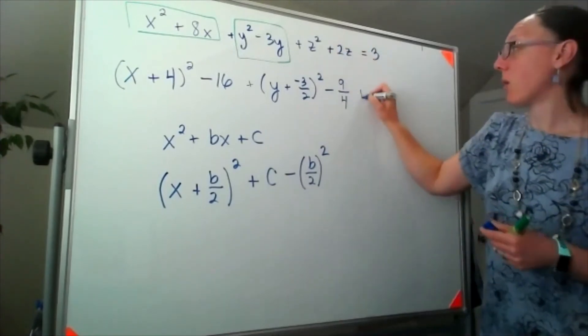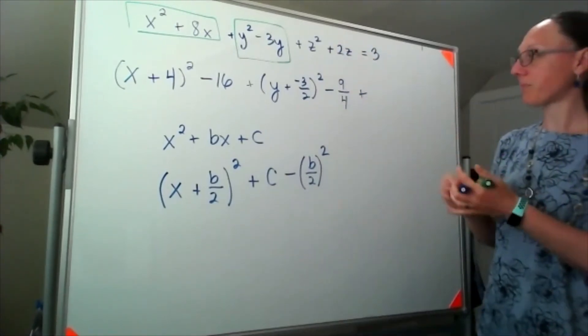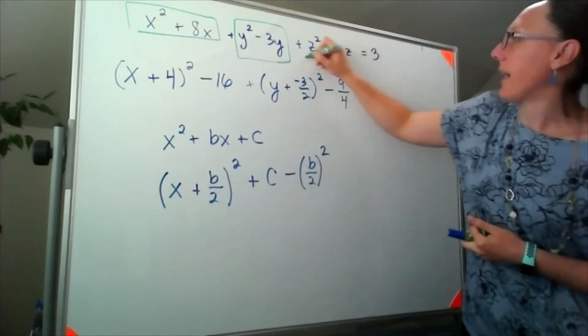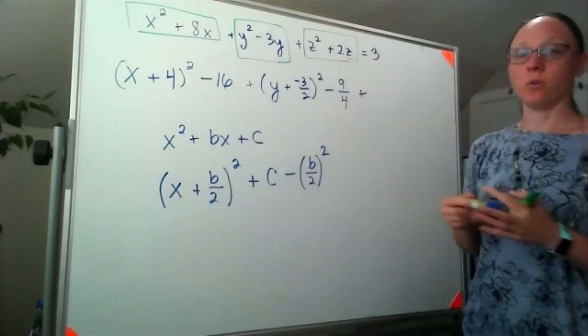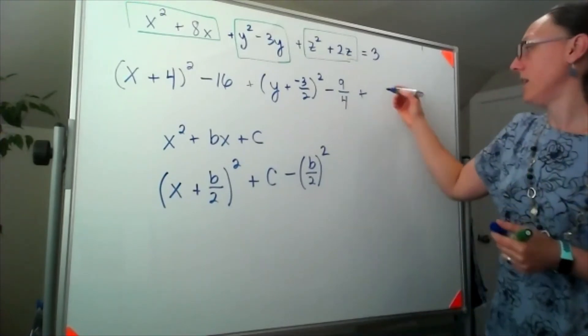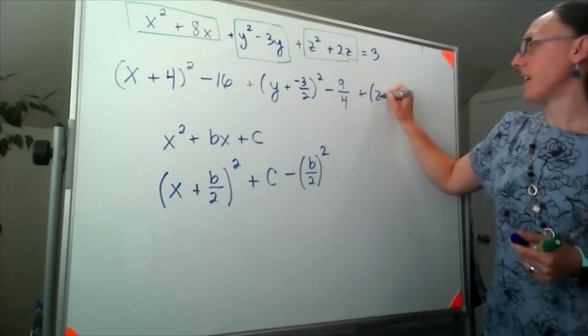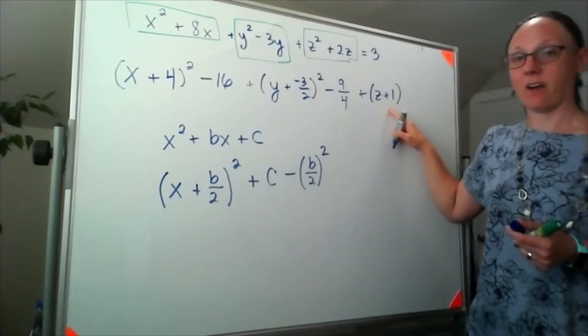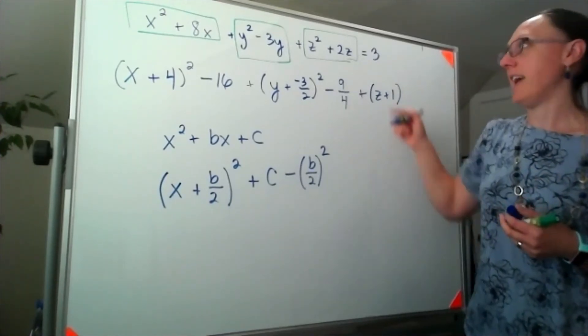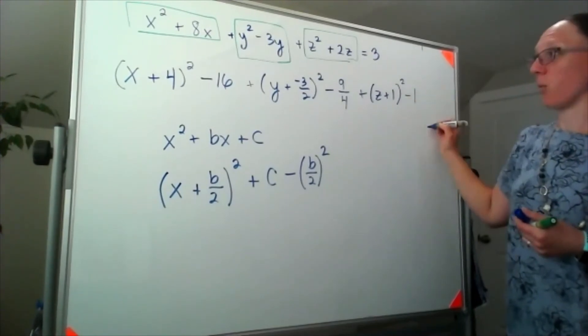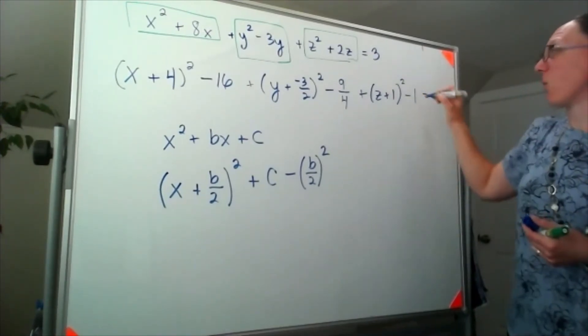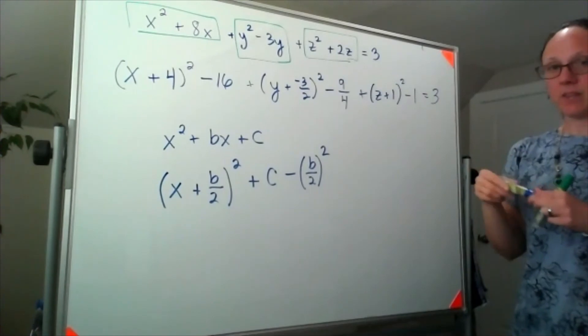Doing the same thing with my z components here. I'm looking at half of 2. It's going to give me a positive 1. So I've got z plus 1. But when I multiply this out, I'd end up with a 1 squared. And I need to subtract that off. So minus a 1. And in this case, I have that whole thing equal to 3.